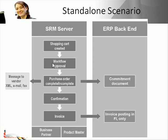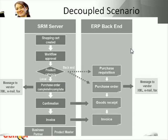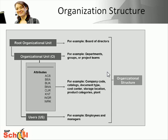In the Standalone Scenario, the coupling is even less. Shopping cart items create local procurement documents only, meaning that all follow-on processes such as confirmation or invoice have to be performed in the SRM server. The last scenario is not really a single scenario but a combination - for example, a combination of the classic and standalone scenarios would mean that some items are handled locally while others are transferred to ERP.